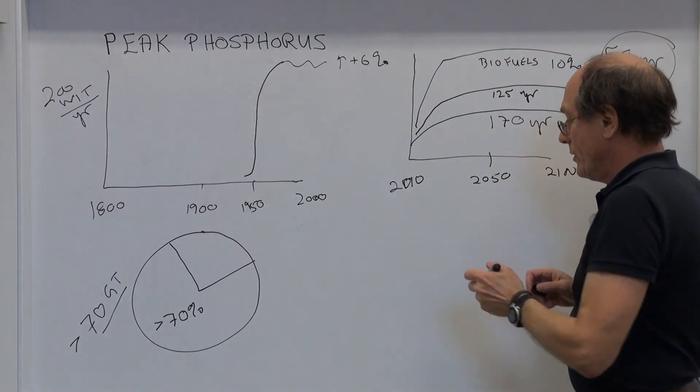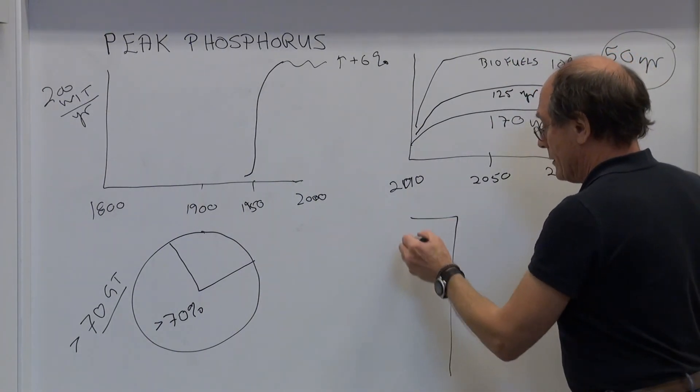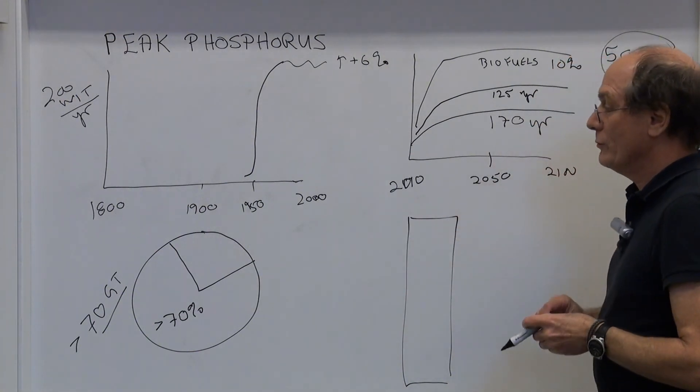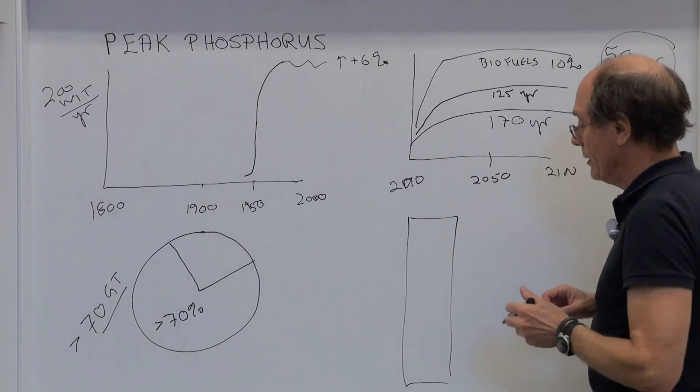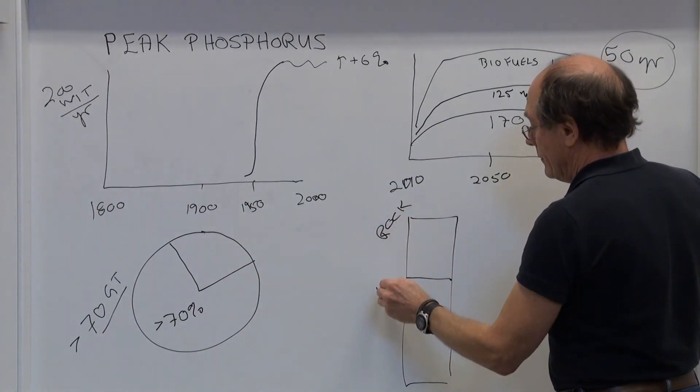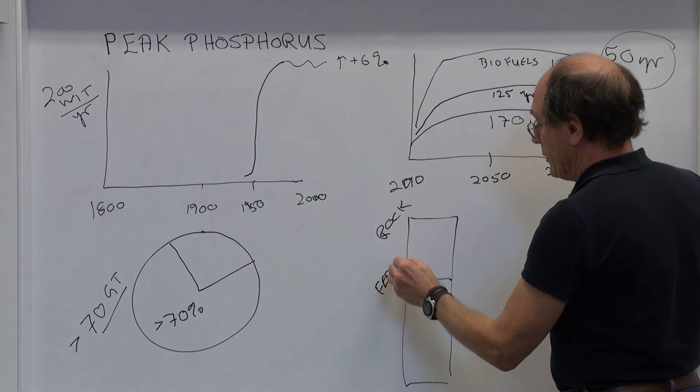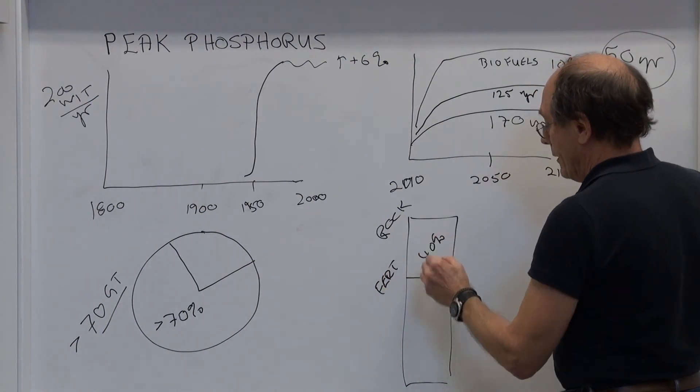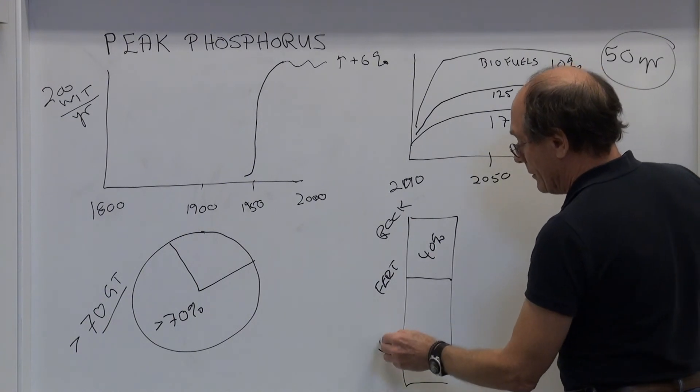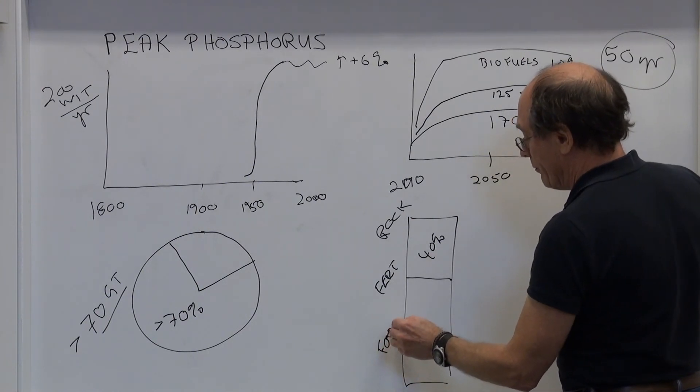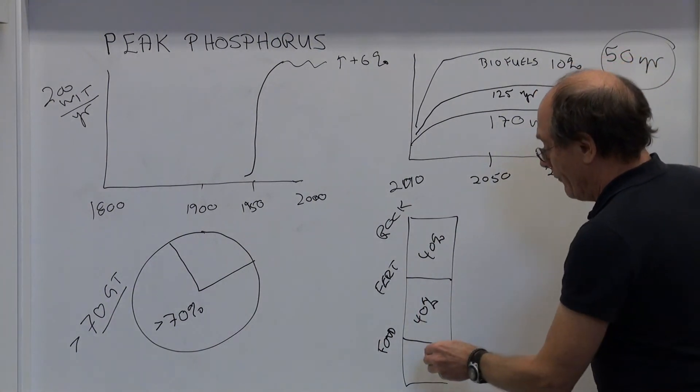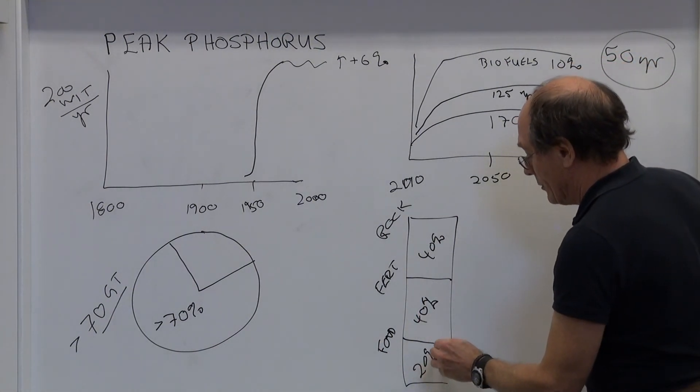The question is, how efficient are we in this process of using rock phosphorus for our food, one of the major fertilizer components? Just to take it from rock to fertilizer, we lose about 40%. And taking it from fertilizer down to the food we actually put on our plates, we lose another 40%. So we only have about 20% that actually enters our bodies.